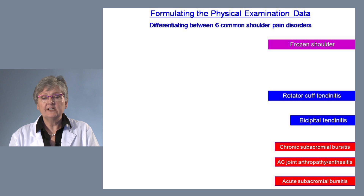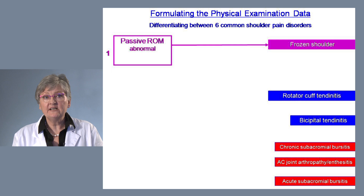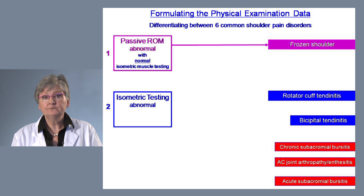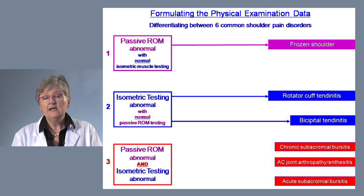These six common causes of shoulder pain are shown on the right-hand side of the slide. To diagnose a frozen shoulder, we look at the group where passive range of motion is abnormal. The important thing about abnormal passive range of motion in this first group is that the isometric muscle testing is normal.